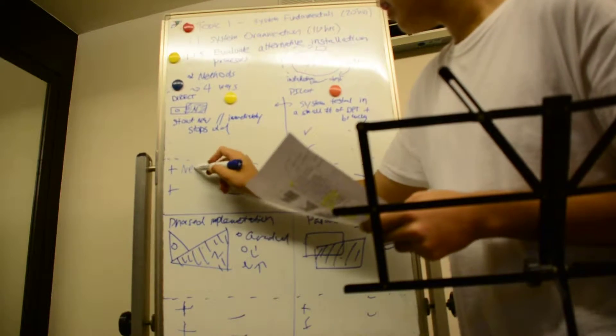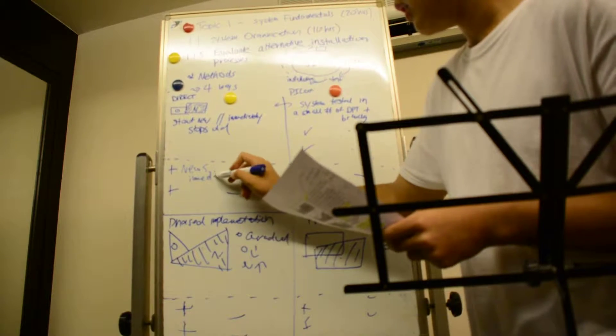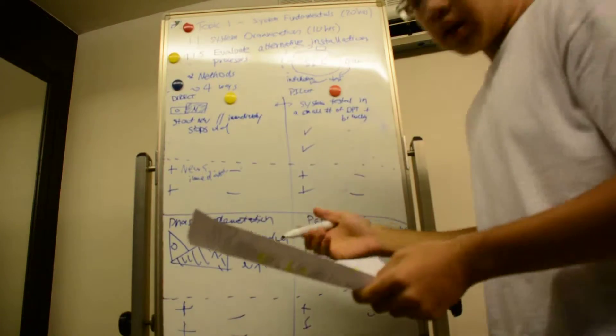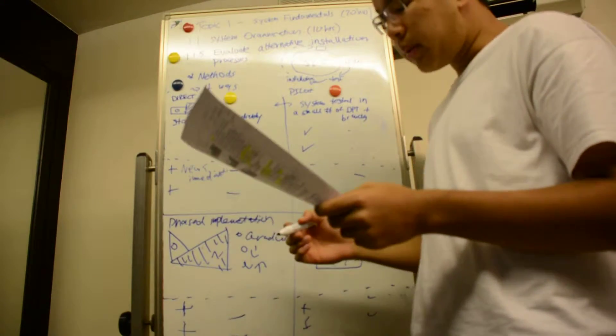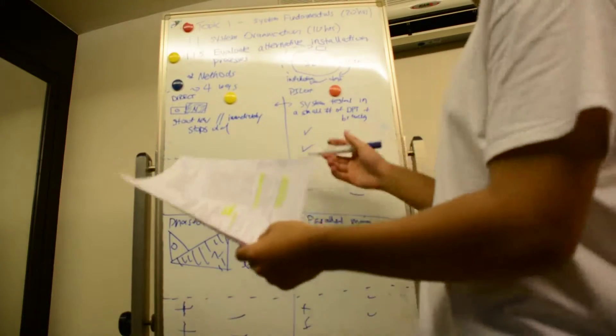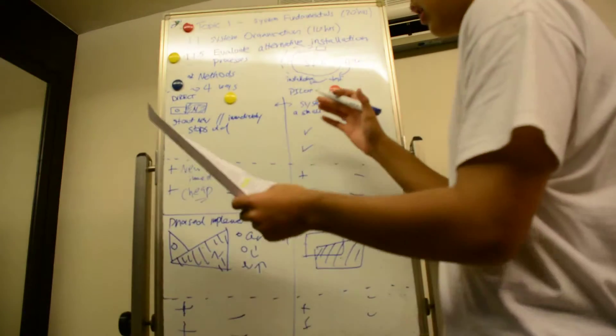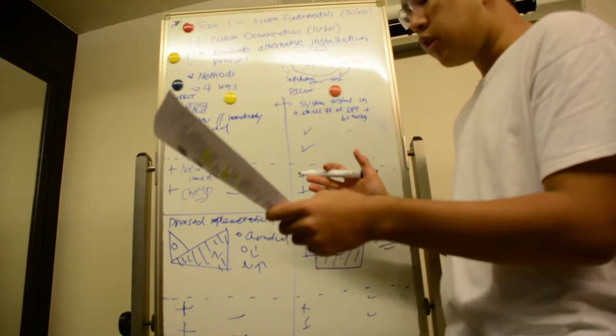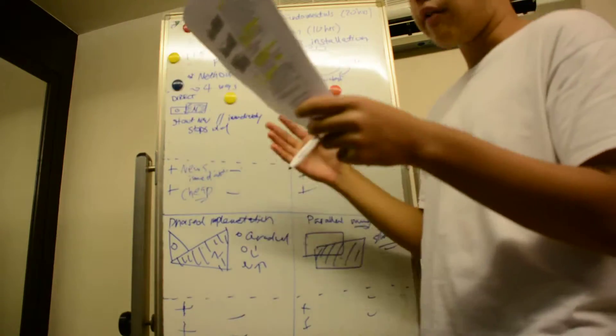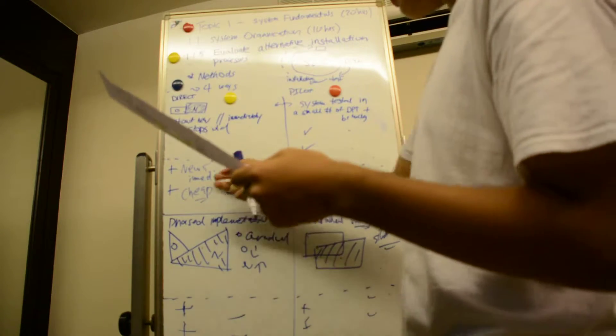The obvious advantage is that the new system can be used immediately. Another possible advantage is that it is cheap as it doesn't have multiple copies running at the same time. It's not partly old and partly new, it's zero to 100% right away. Those are the advantages of direct installation.